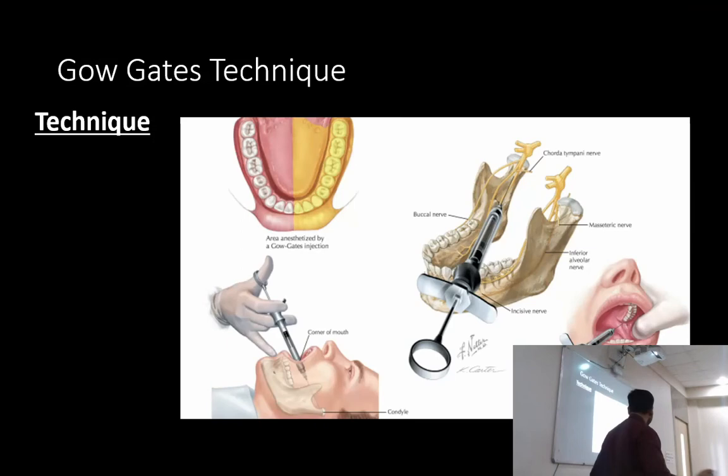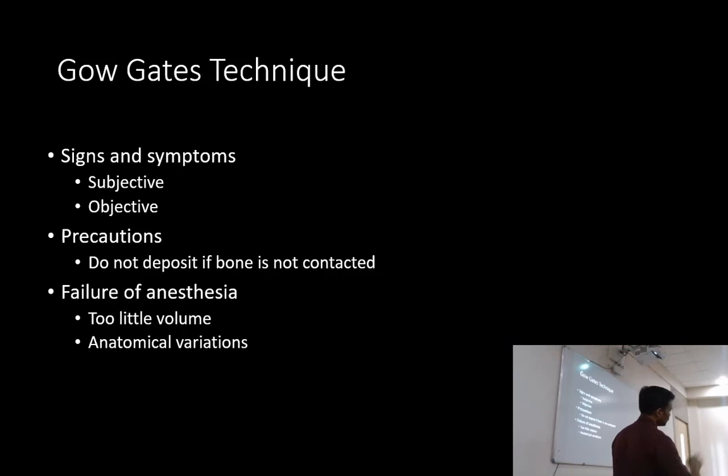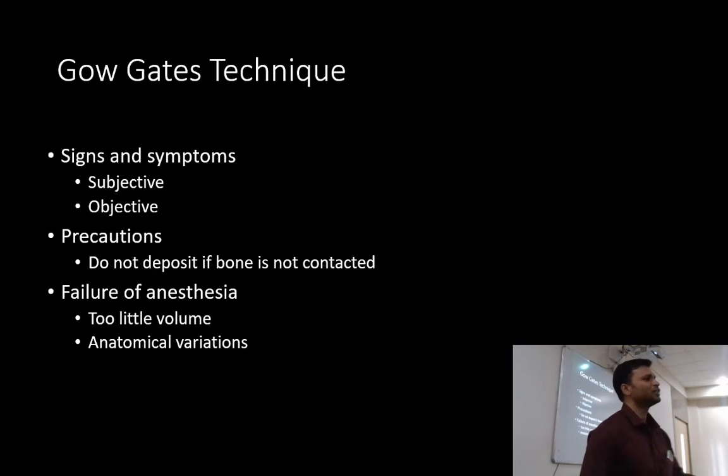This is where we achieve the total mandibular nerve block. Subjectively, the patient will have lip numbness and tongue numbness — tell the patient to go sit back and rest. Objectively, there will be no pain during instrumentation when you probe the soft tissue.